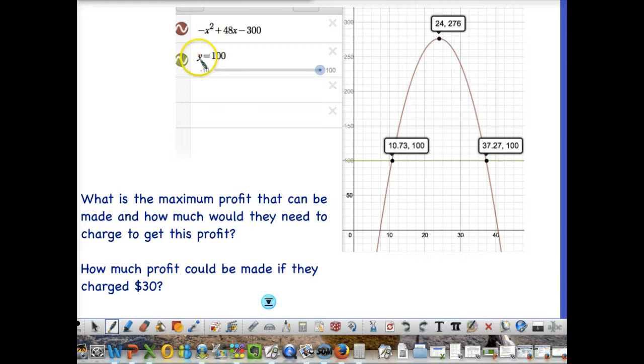Notice that it intersects our parabola in two different spots. And this is the very nature of the parabola, right? It's symmetric on both sides. So the reason that you can charge either $10.73 or $37.27 is due to supply, right?